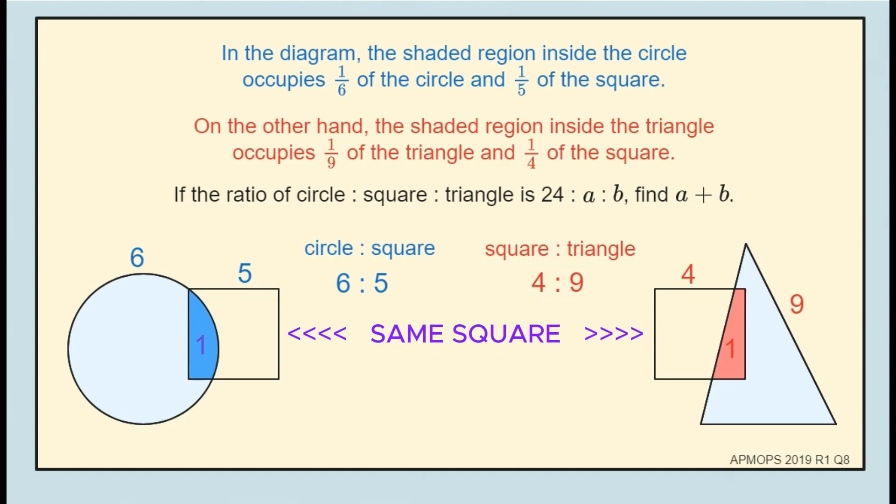Clearly, the two squares in the diagram are the same, with the same area. We can represent them with the same unit. This is done by scaling up 5 and 4 to their lowest common multiple, 20.